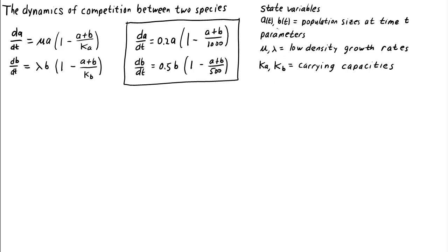In this way, population B grows faster, but population A has a larger carrying capacity. And we saw with numerical simulations using the applet that population A could out-compete population B due to its larger carrying capacity.